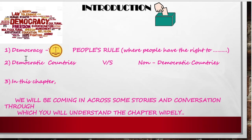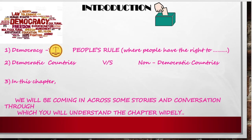The second point is democratic countries versus non-democratic countries. Democratic countries are those which follow democracy — and democracy is not just giving elections or selecting representatives, but democracy means people have the rule, people have enormous powers in the country to make decisions and also to rule the country in whatever way they want.